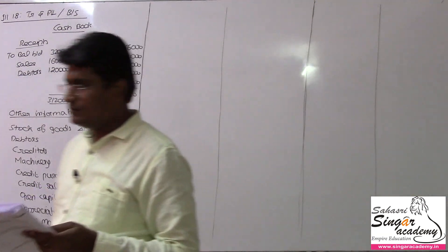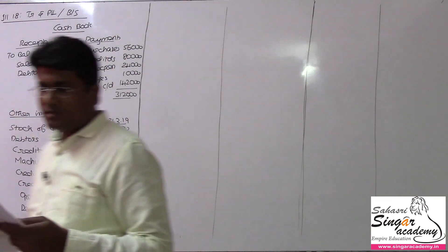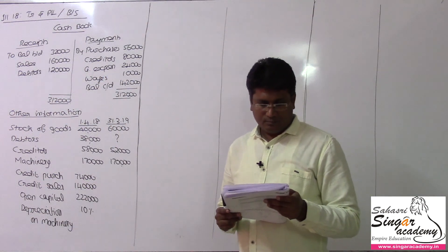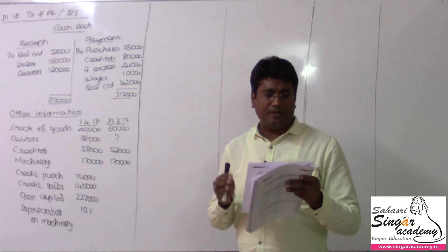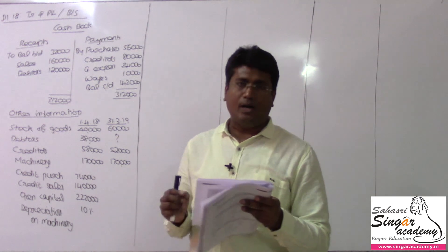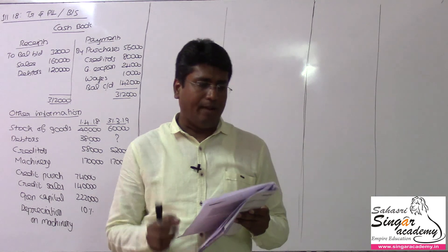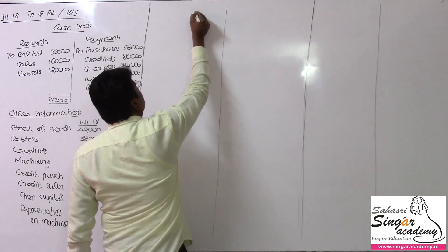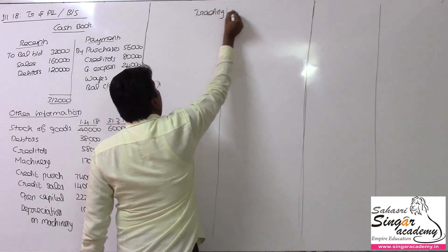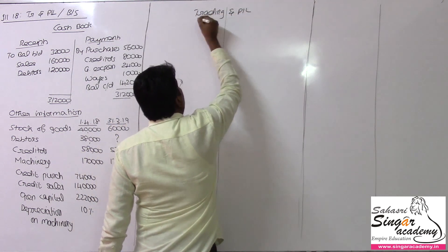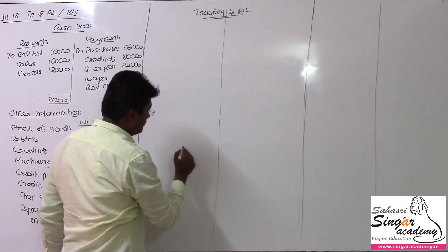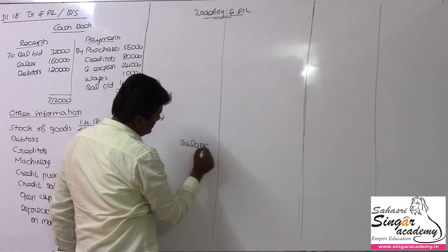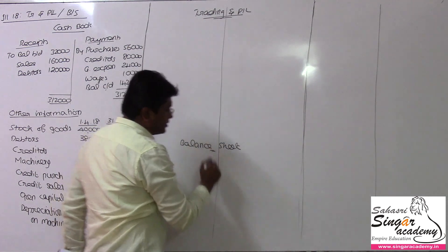Illustration 18. Bharati does not maintain her books of accounts under the double entry system. From the following details, prepare the Trading and Profit and Loss Account for the year ending 31st March 2019 and the Balance Sheet on that date. I have to prepare the balance sheet.